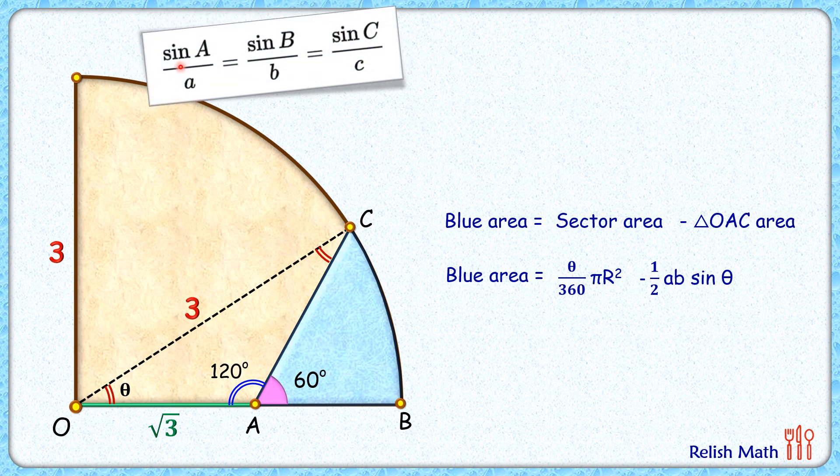In the sine rule, sin A/a = sin 120°/3. Now, C is not known to us, but the side length opposite to angle C is √3. So this equals sin C/√3.